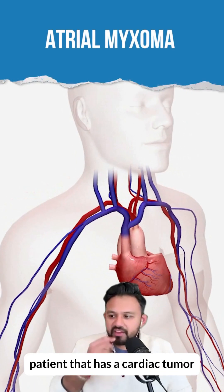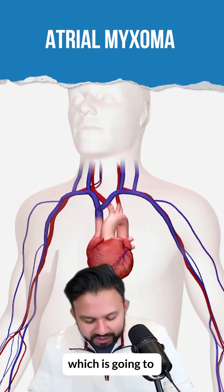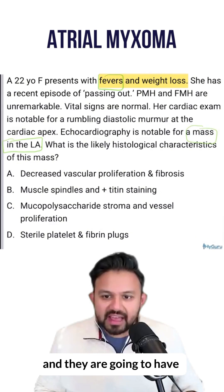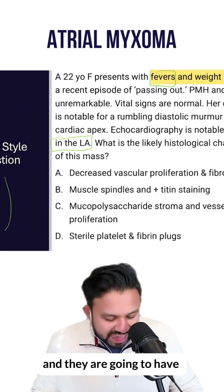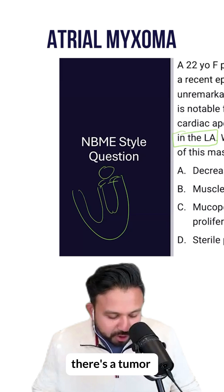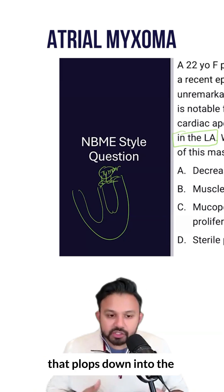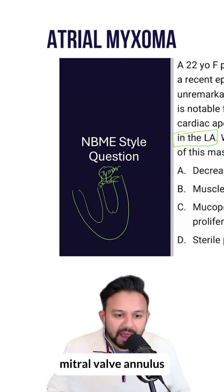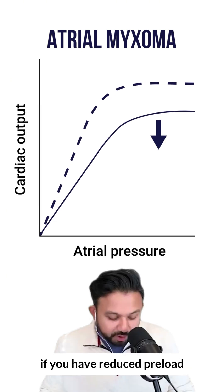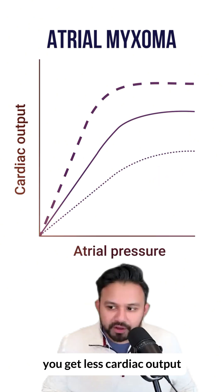This is going to be a patient that has a cardiac tumor, which is going to present as systemic symptoms — fever and weight loss — and they are going to have this ball valve effect. This is where there's a tumor in the left atrium that plops down into the mitral valve annulus, reducing the amount of preload. If you have reduced preload, less stroke volume; if you have less stroke volume, you get less cardiac output.